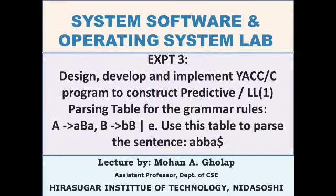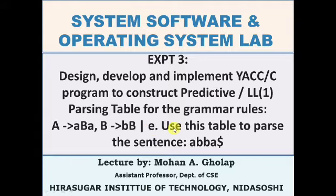Dear students, now we will see experiment number 3 from System Software and Operating System Laboratory. The aim of this experiment is to design, develop and implement a YAC or C program to construct a predictive or LL(1) parsing table for the grammar rules: A gives ABA, B gives BB, and B gives epsilon. Use this table to parse the sentence A, B, B, A, dollar.